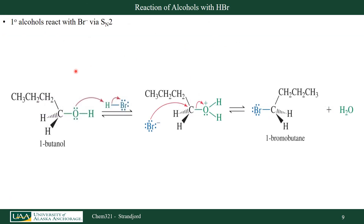Let's look at the mechanism for that. Here I have 1-butanol, which is a primary alcohol. So I think that's going to undergo substitution via SN2 because it's primary. I'm first going to protonate my oxygen using my HBr, releasing my bromide ion — I've made H2O a good leaving group. Now my bromine can come in from the backside, attack that carbon, and kick off my water to form 1-bromobutane with the opposite stereochemistry — Walden inversion.